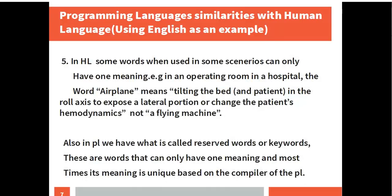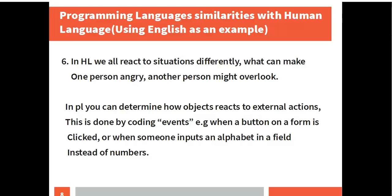The fifth similarity is that in human life, some words when used in some scenarios can only have one meaning. For example, in an operating room in a hospital, the word 'airplane' means tilting the bed and patient to expose a lateral portion or change the patient's hemodynamics — it does not mean a flying machine. Also in PL, we have what are called reserved words or keywords. These are words that can only have one meaning, and most times the meaning is unique based on the compiler of the programming language.